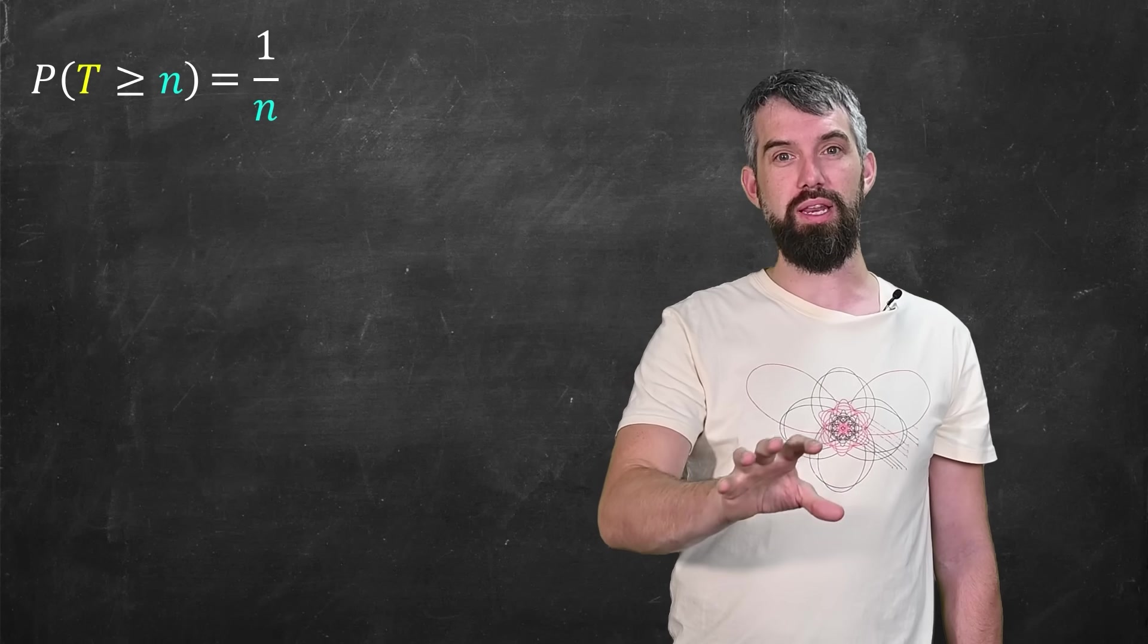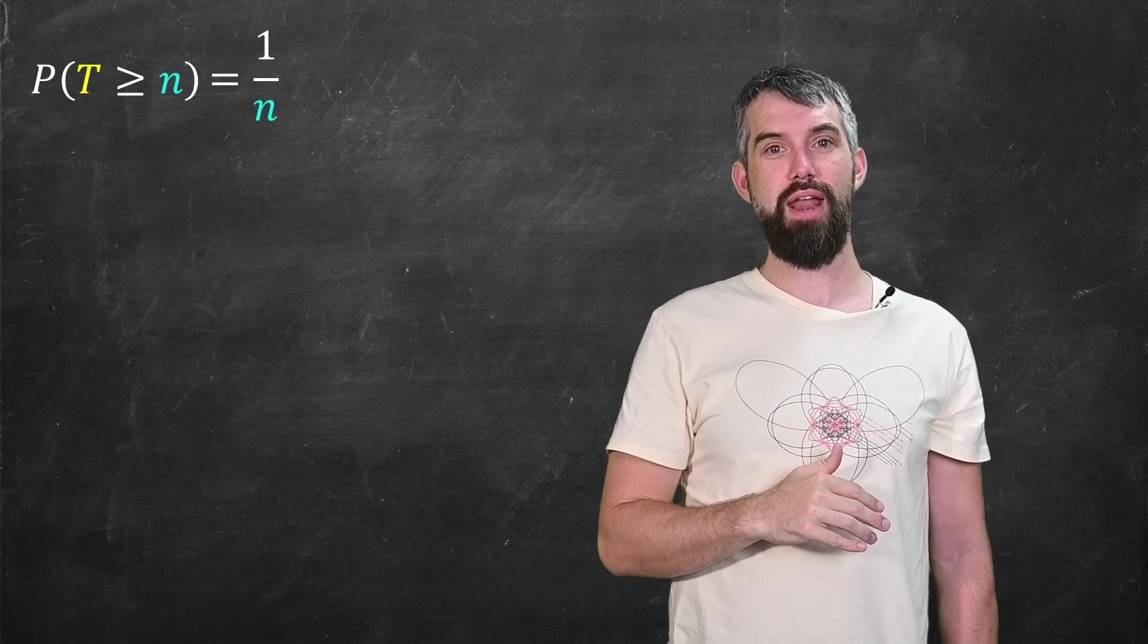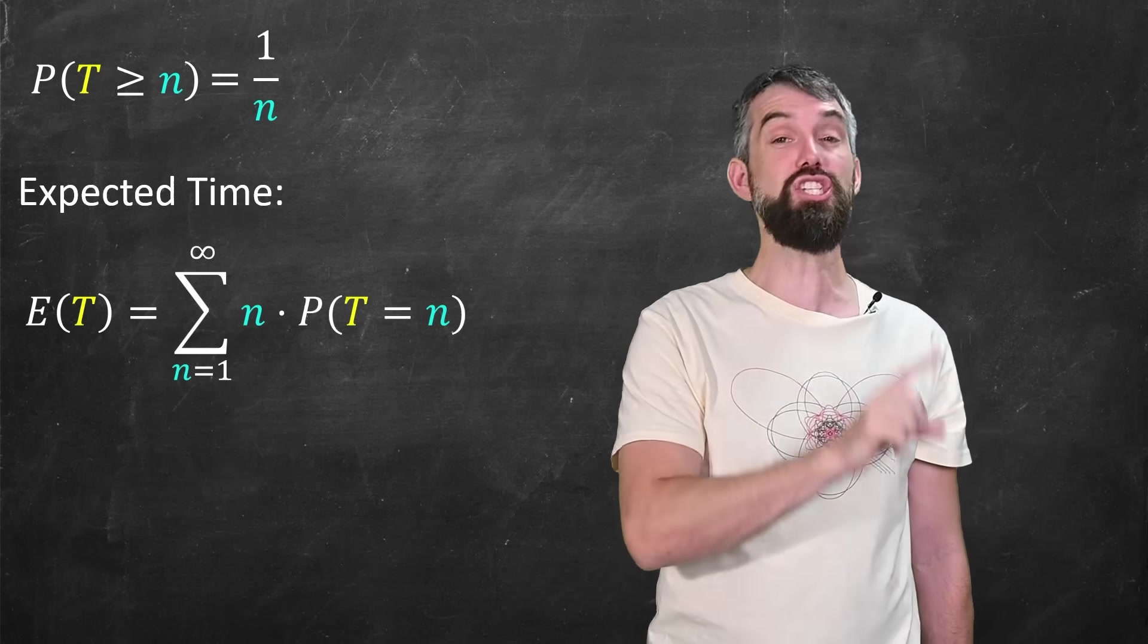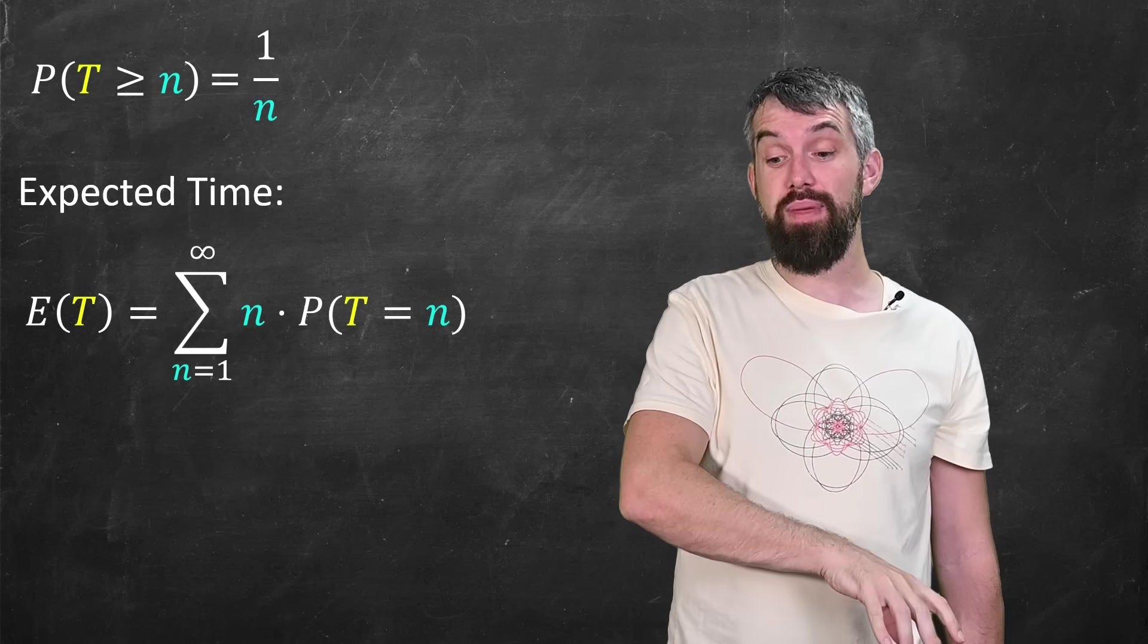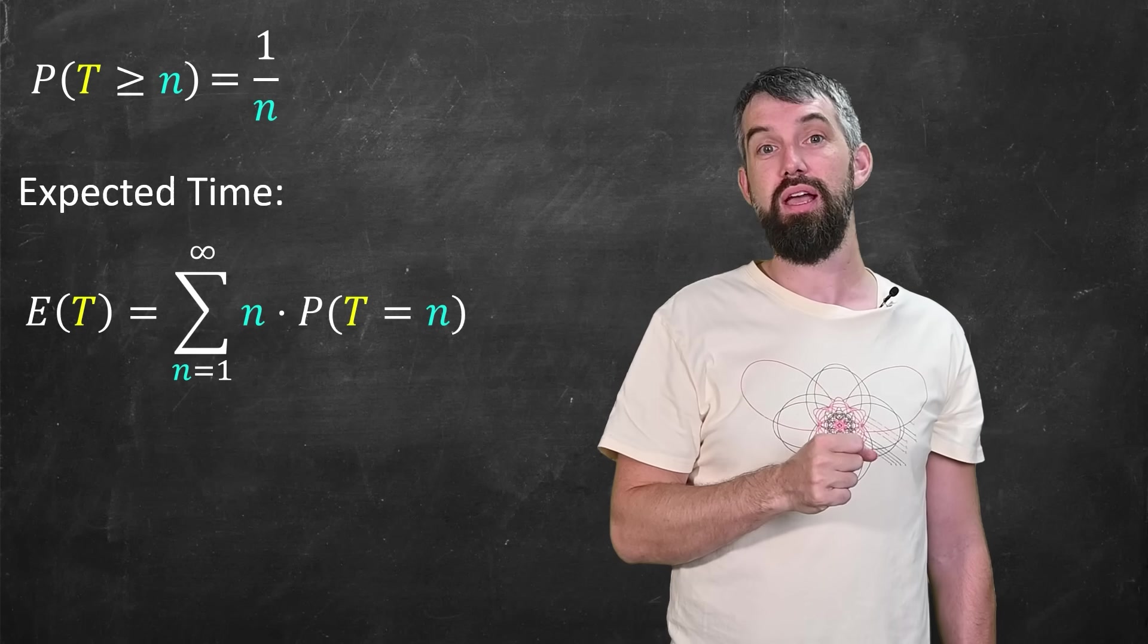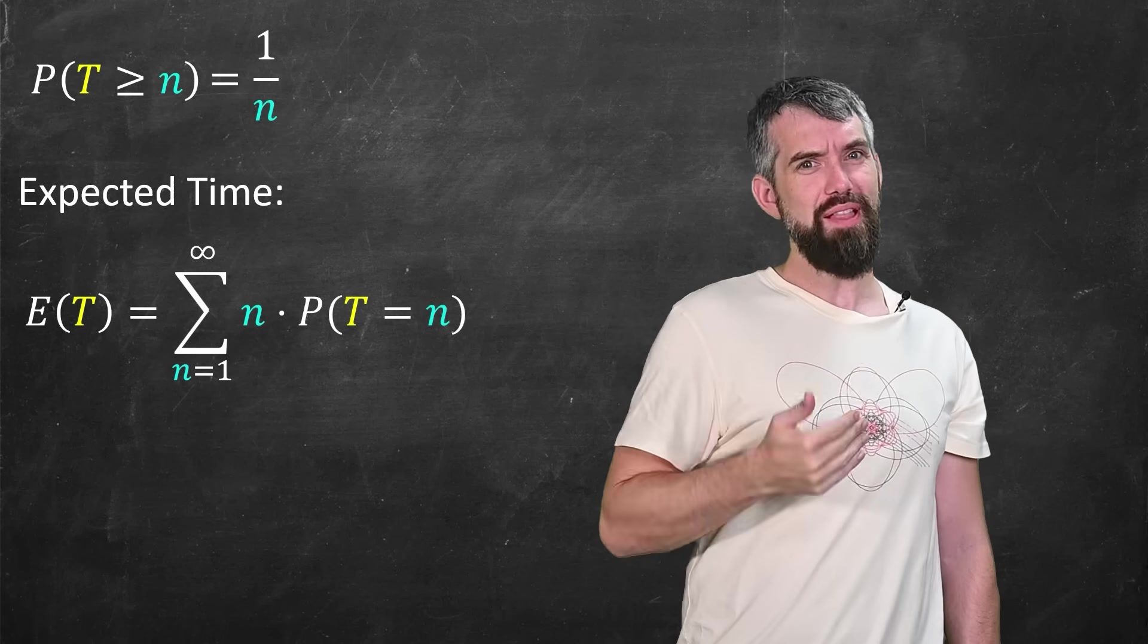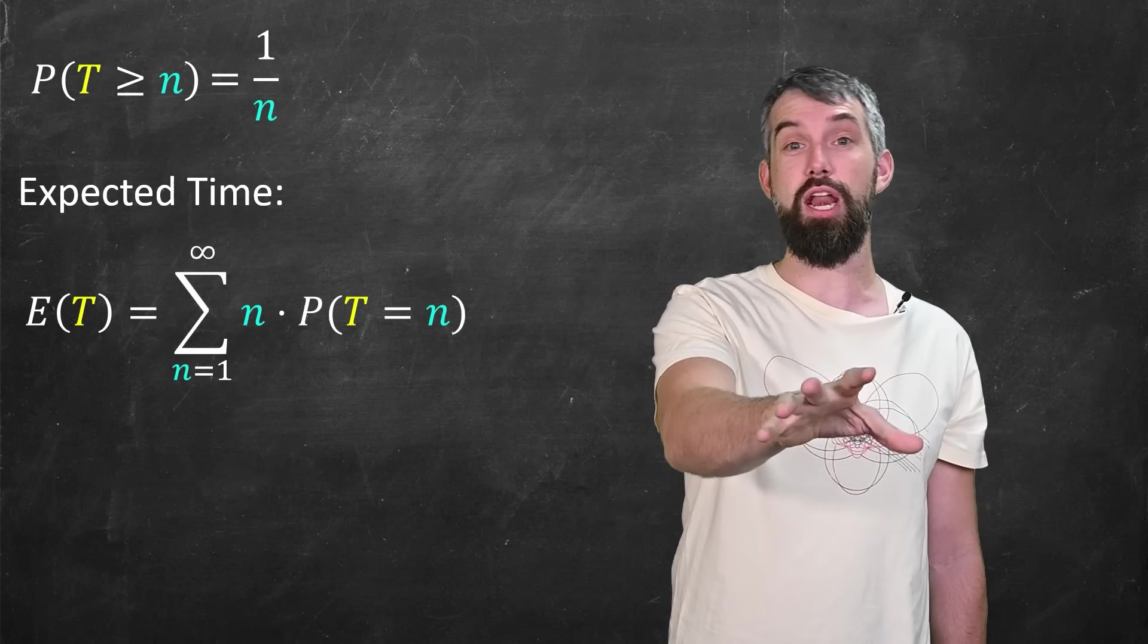But now I want to change the question. I want to say, not just the probability, what should I expect the length of time to be? And for expectation value, we use this formula. The expectation of any quantity, so in this case the expected amount of time, is given by the sum of the values, the length of time here, that's going to be n, times the probabilities that it's going to be each particular value of n. This gives me the length of time I expect to have to wait until I get a red ball.